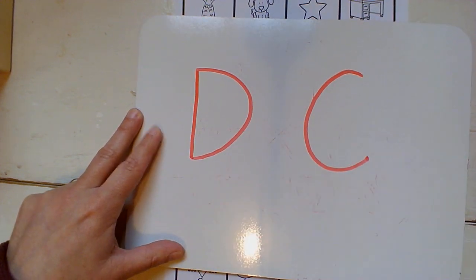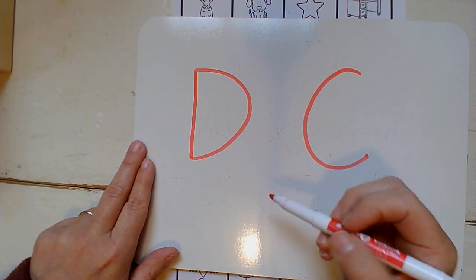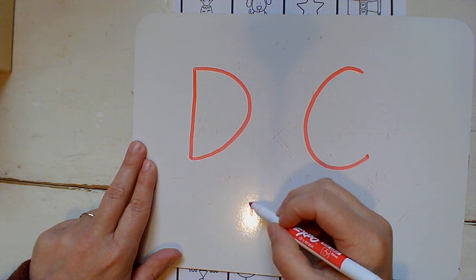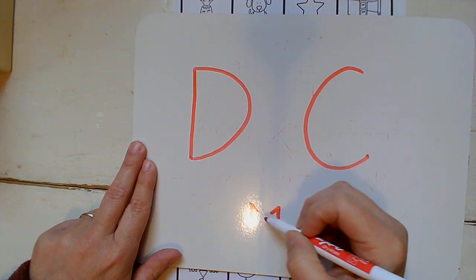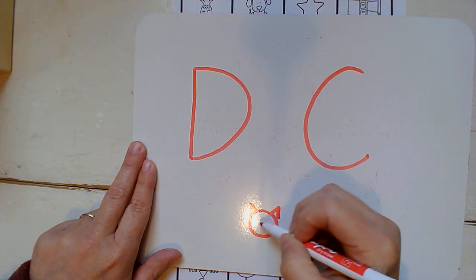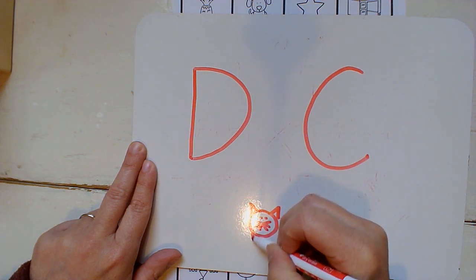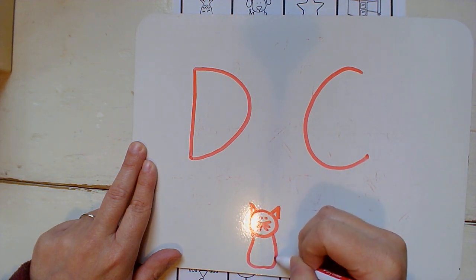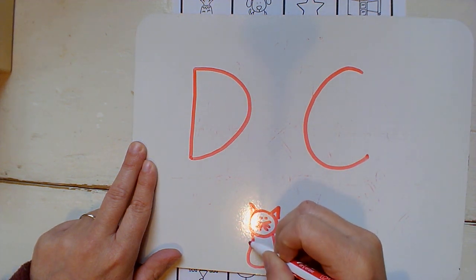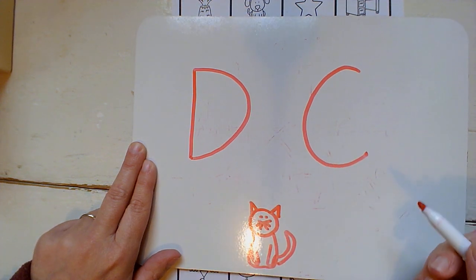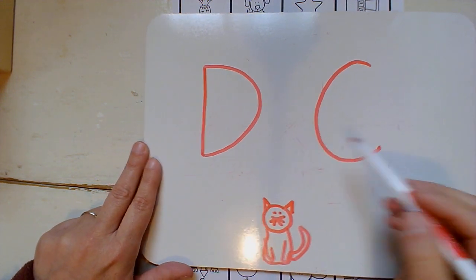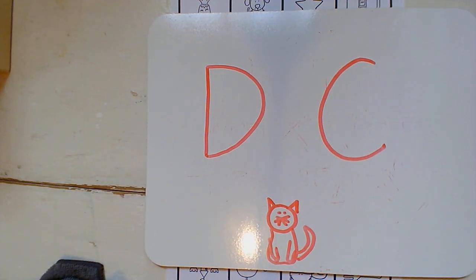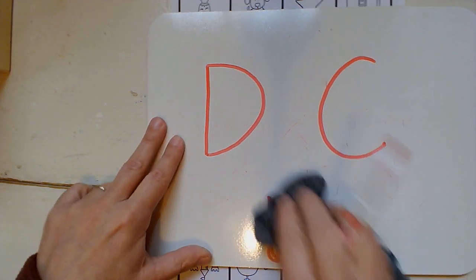Okay, let's do... It's a cat. What letter does cat start with? D, D, D, or K, K, K? K, K, K. Yeah, that's a C for cat.